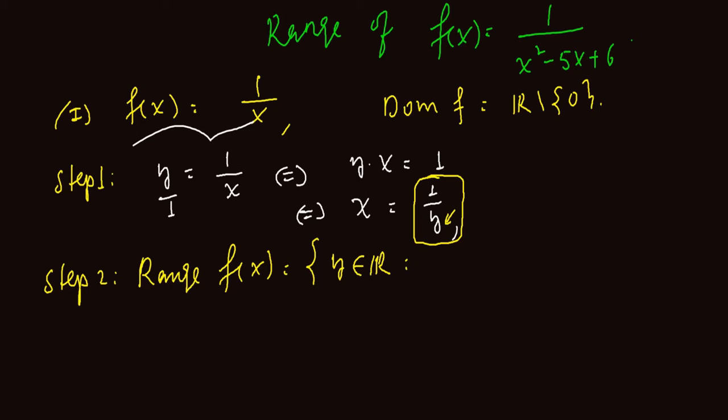So the range of 1 over x is all real numbers without 0. For another example, the domain is all real numbers without the number which makes the denominator 0. But to find the range: step 1, write y equal to 1 over x minus 2. So x is the input and y is the output. We are looking for the collection of all outputs y — this collection is called the range.